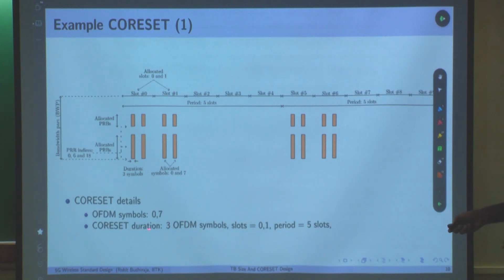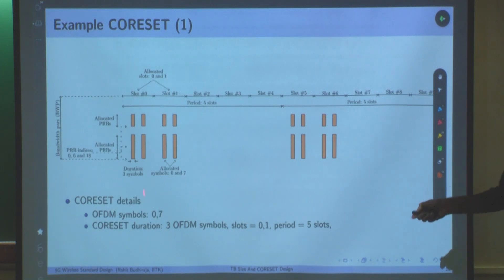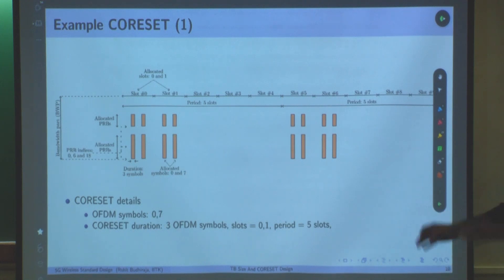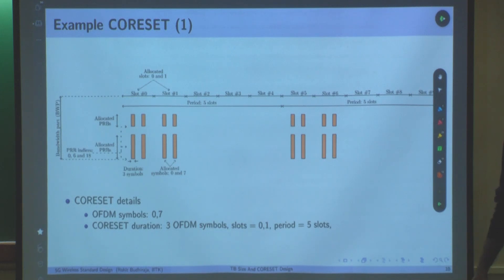All this CORESET configuration information must somehow be available to the user so it knows where to search. At this level we assume the user already knows the CORESET definition. Even with that knowledge, it still does not know exactly where its DCIs are located — it has to search across all of them. We have understood the CORESET structure in great detail today; remaining details will continue in the next class.